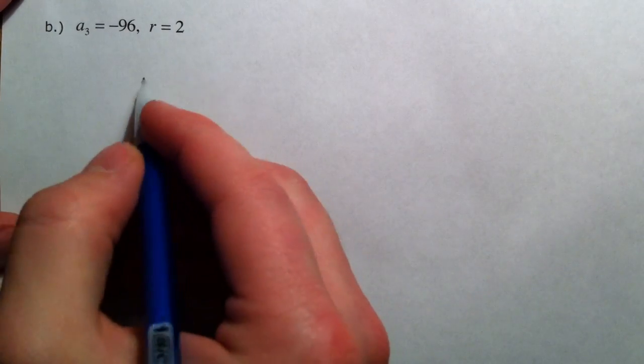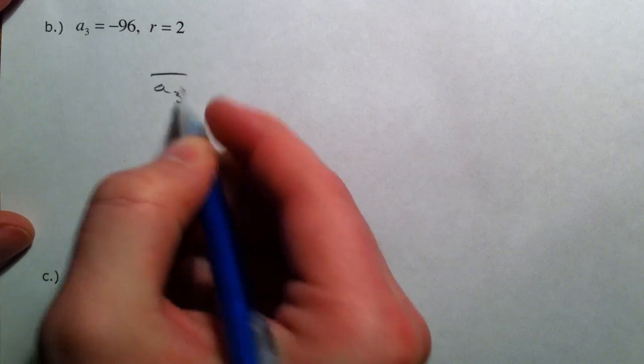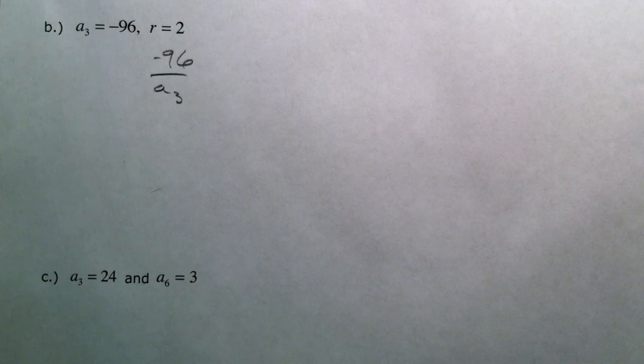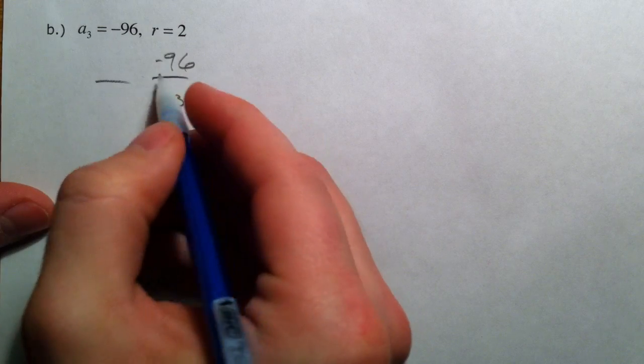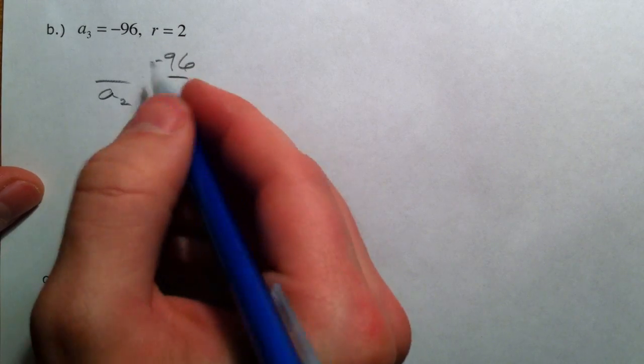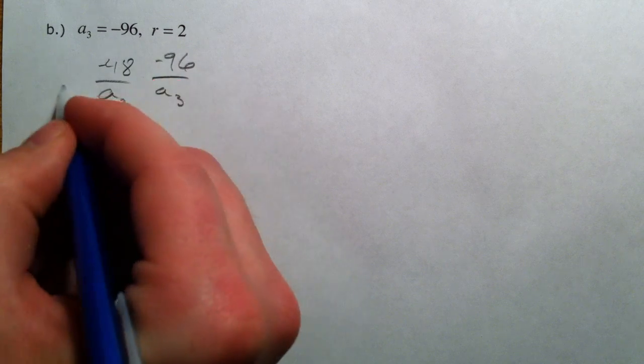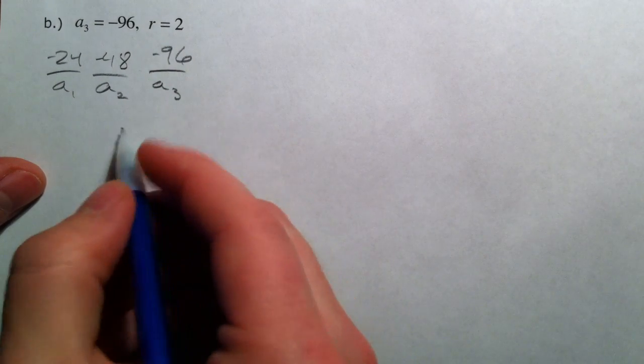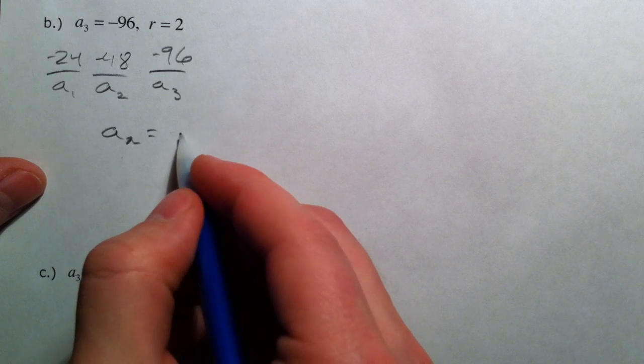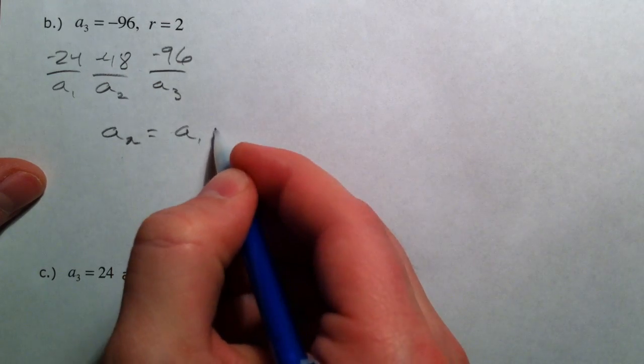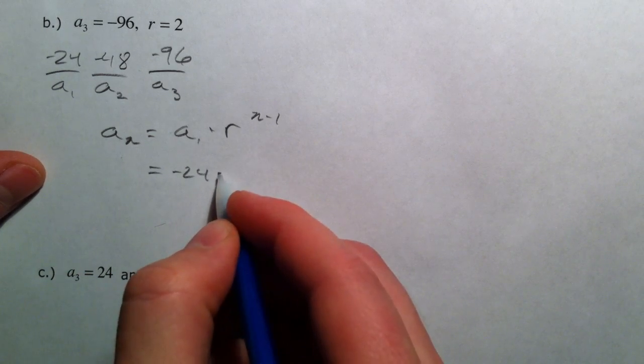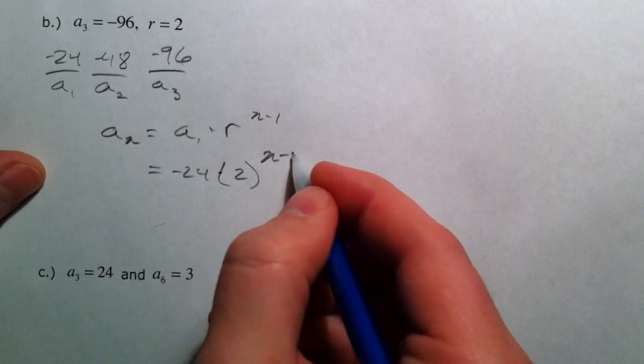So this one I'm going to go through logically first because we're at a sub 3. If we have negative 96 and we want to find a sub 2, we divide by 2 to go the other way. And so we would get negative 48, and then a sub 1 would be negative 24. And so your a sub n term would be a sub 1 times r to the n minus 1, same thing over and over again. So negative 24 times 2 to the n minus 1.